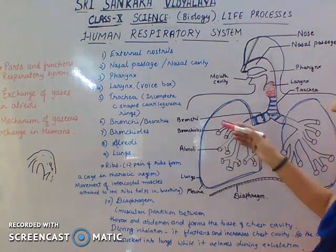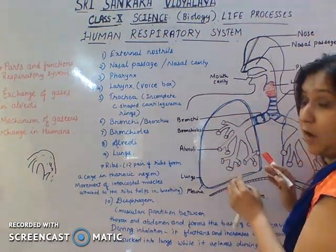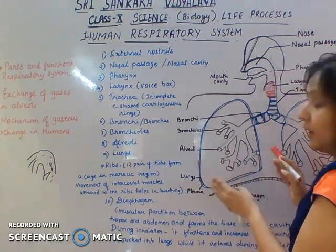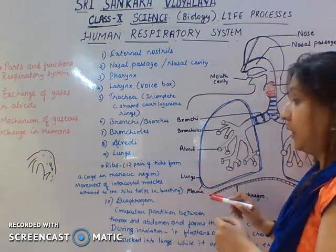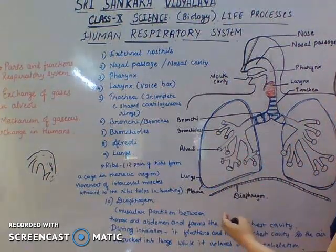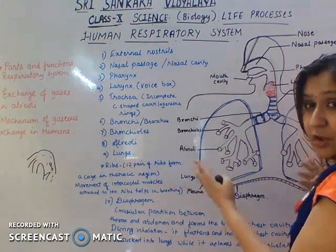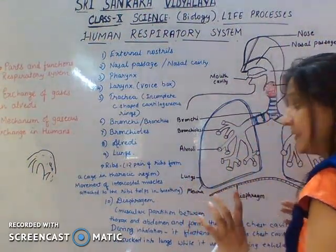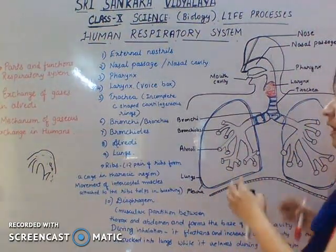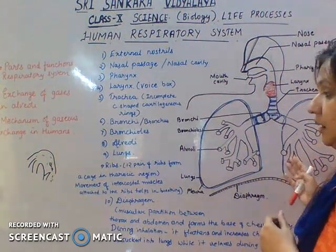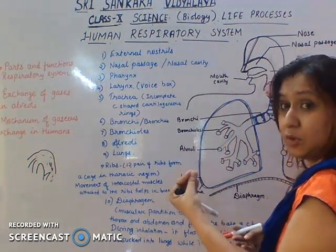Next is the lungs. The main respiratory organ of the human respiratory system is the lungs. The lungs are surrounded by a covering called the pleura. Twelve pairs of ribs are present in the thoracic region, which is the chest region. The intercostal muscles attached to the ribs help in breathing.